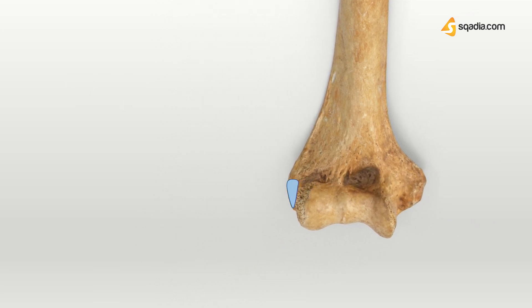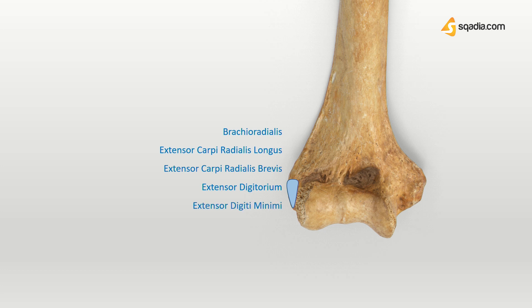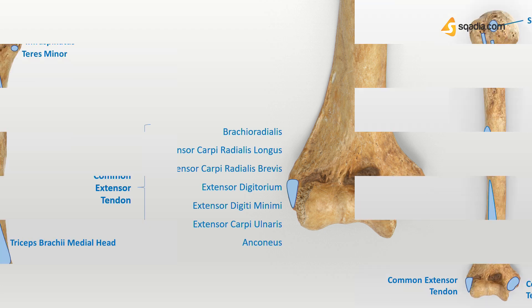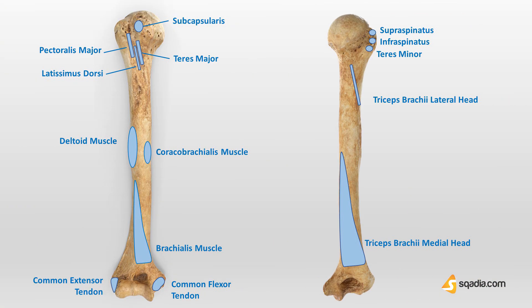In the last section, we discussed that there is an impression on the lateral epicondyle which provides attachments for seven muscles: brachioradialis, extensor carpi radialis longus, extensor carpi radialis brevis, extensor digitorum, extensor digiti minimi, extensor carpi ulnaris, and anconeus. All seven muscles are part of the superficial group of the posterior compartment of the forearm. Collectively, you can view the attachments here.